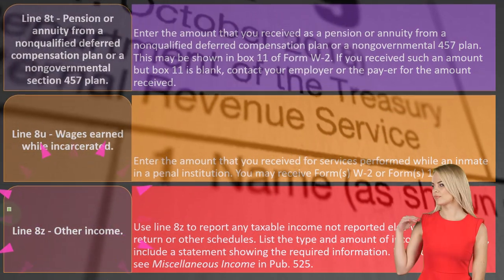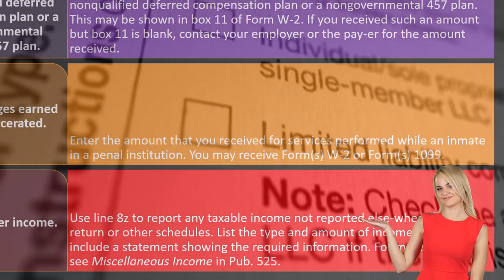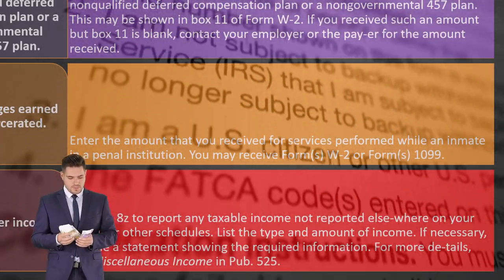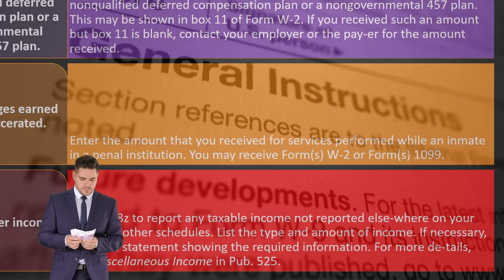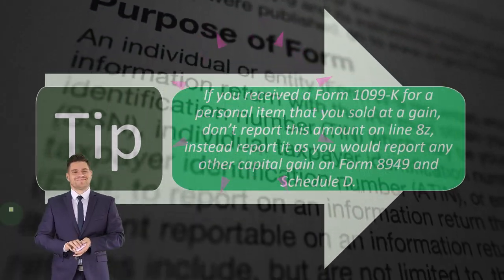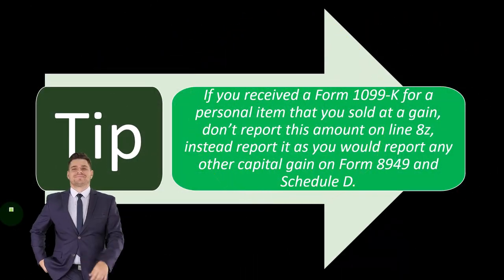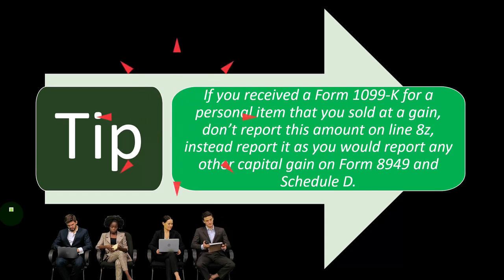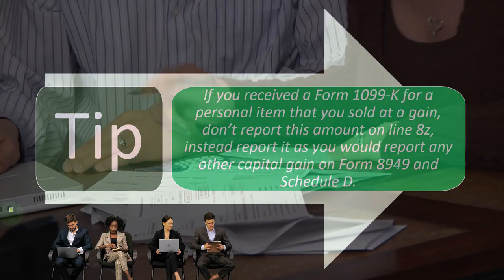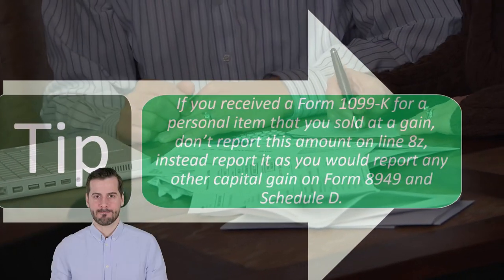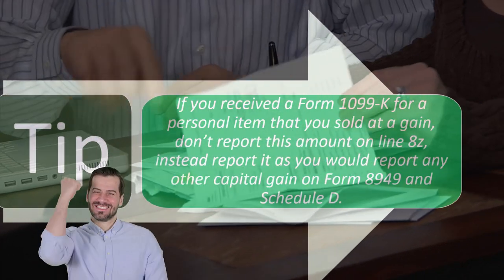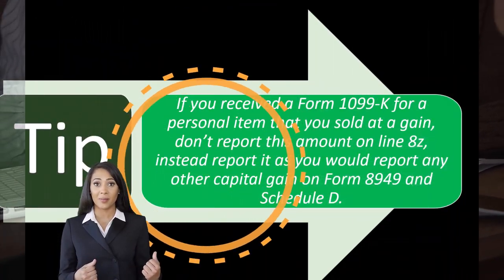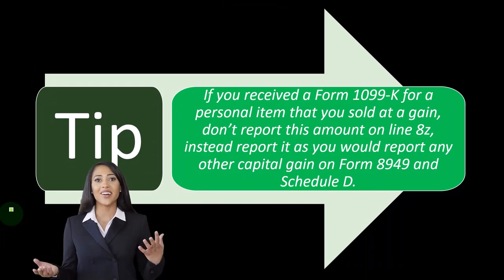Line 8Z — other income. Use line 8Z to report any taxable income not reported elsewhere on your return or other schedules. List the type and amount of income; if necessary, include a statement showing the required information. See Publication 525 for more details. Tip: if you received a Form 1099-K for a personal item that you sold at a gain, don't report this amount on line 8Z. Instead, report it as a capital gain on Form 8949 and Schedule D. The IRS is trying to crack down by getting more 1099-Ks issued through platforms and payment processors.